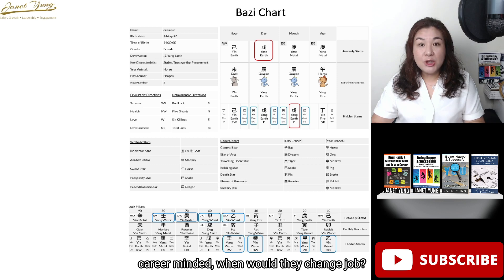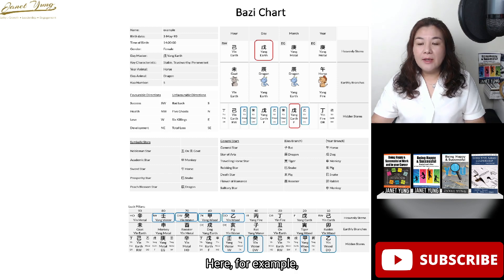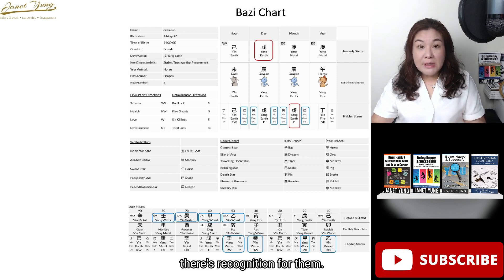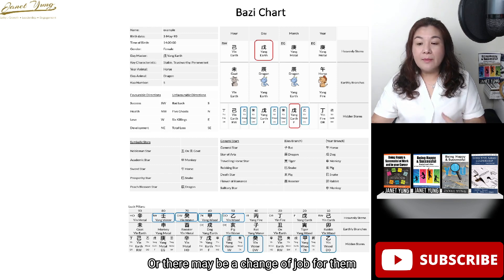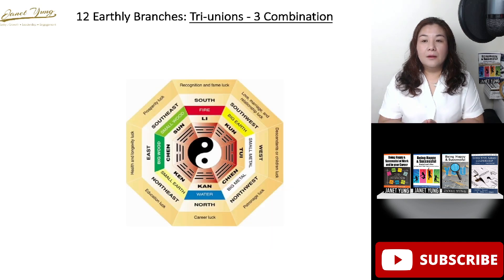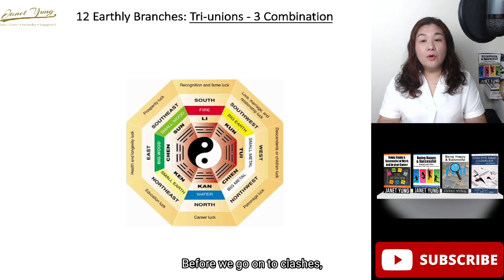That's one way of reading the chart for career-mindedness. For example, at around age 50, there is likelihood of recognition for them — there may be a change of job or an increase in responsibility as well.